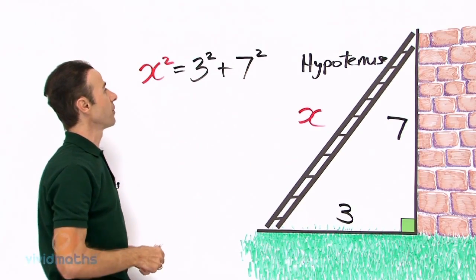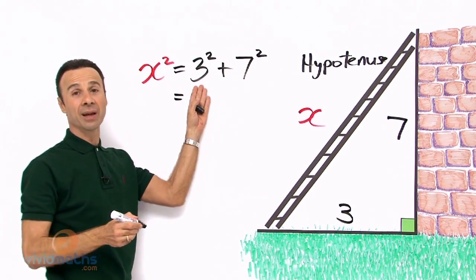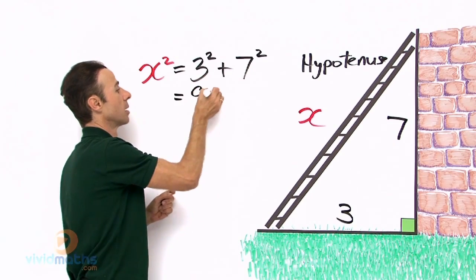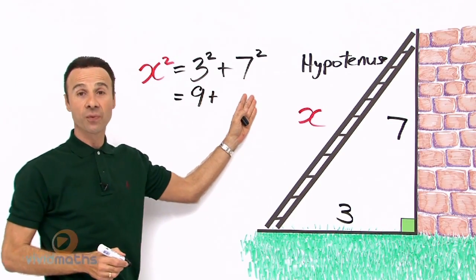Okay, let us solve for the right hand side. So we have 3 squared is 9 and 7 squared is 49.